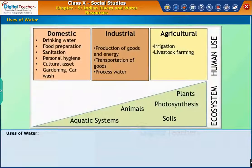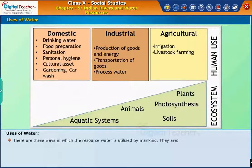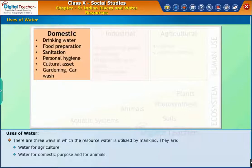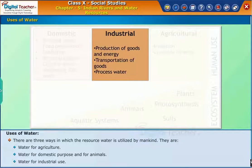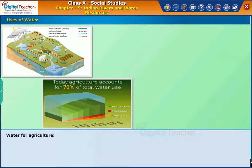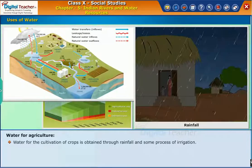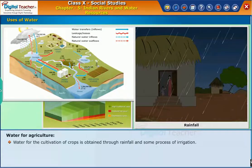Now, let us learn about the various ways in which water is utilized. There are three ways in which the resource water is utilized by mankind. They are water for agriculture, water for domestic purpose and for animals, and water for industrial use. Water for the cultivation of crops is obtained through rainfall and some process of irrigation.